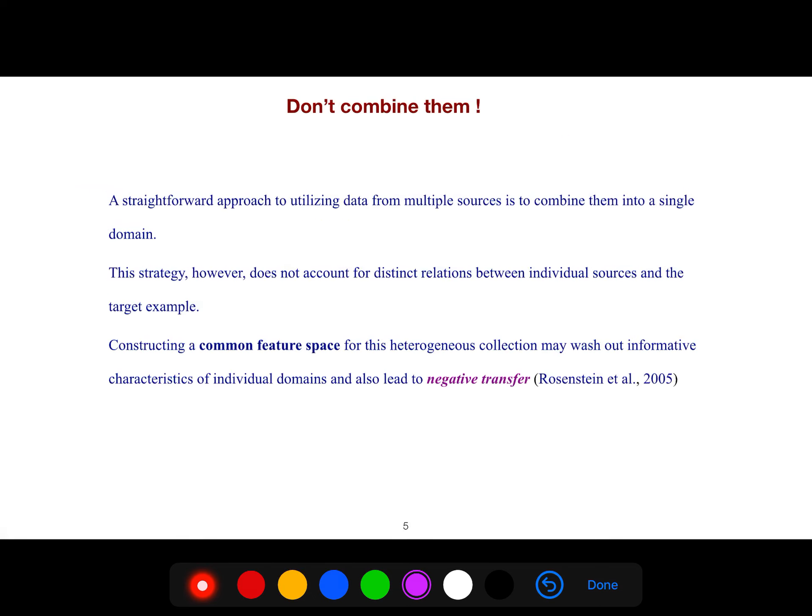A straightforward approach to utilizing data from multiple sources is to combine them into a single domain, but never do that - it has very bad performance. This strategy does not account for distinct relations between individual sources and a target example. Constructing a common feature space for this heterogeneous collection may wash out - this is the reason that I say it is bad - because it may wash out informative characteristics of individual domains, I mean domain-specific features. You lose domain-specific features.